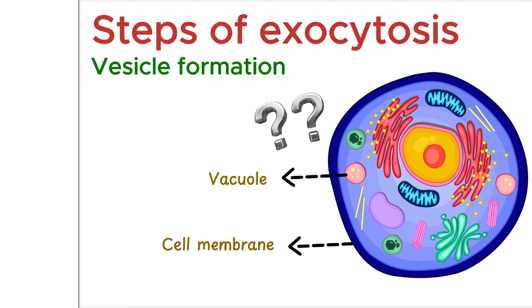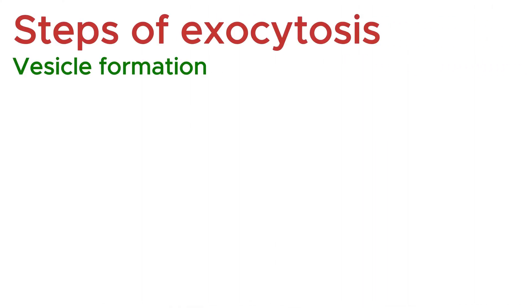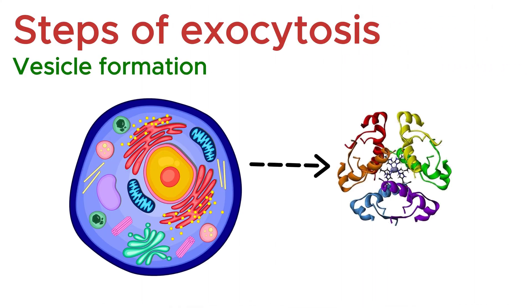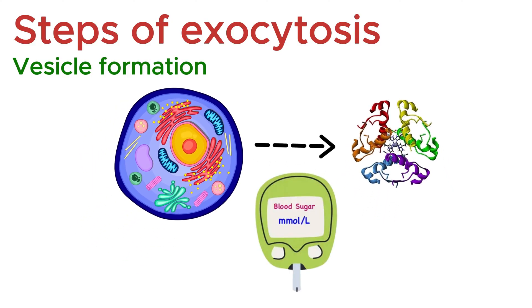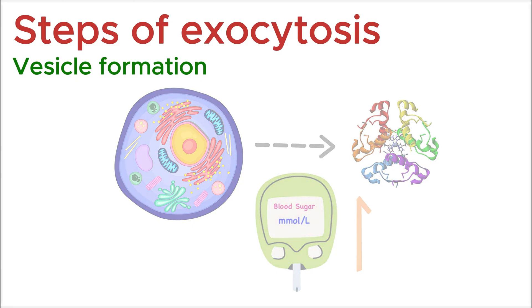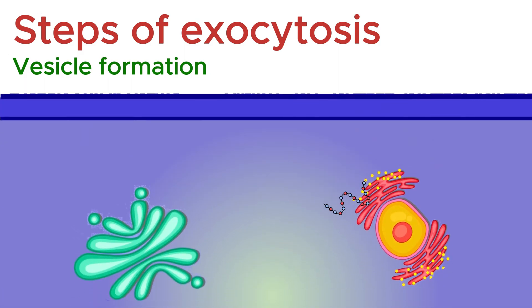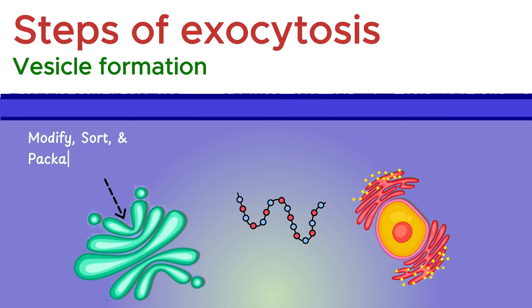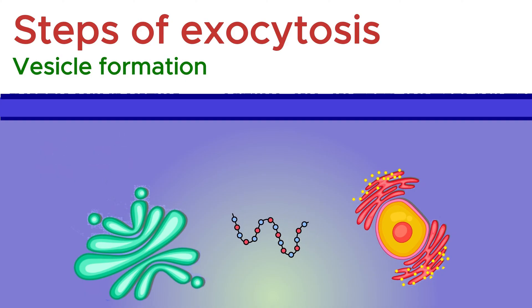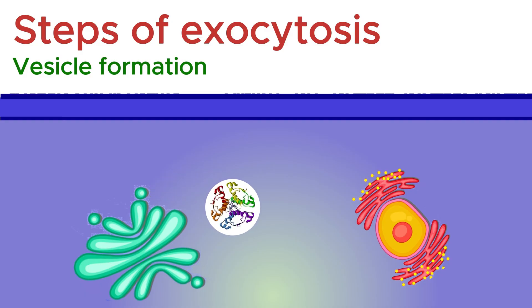But how is it formed? Let's use the protein example — let's say cells need to excrete insulin, a hormone that controls sugar levels in the blood. When blood sugar levels rise, cells need to release insulin. Insulin is synthesized through the process of transcription and translation. The Golgi complex plays a crucial role in modifying, sorting, and packaging the protein. It receives the newly synthesized insulin from the endoplasmic reticulum, processes it, and then packages it into small membrane-bound sacs called vesicles.